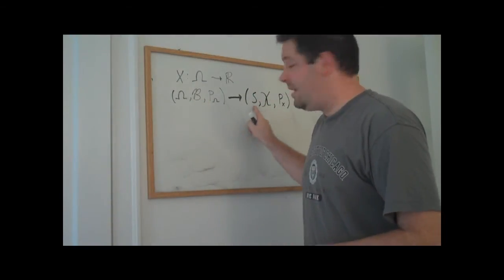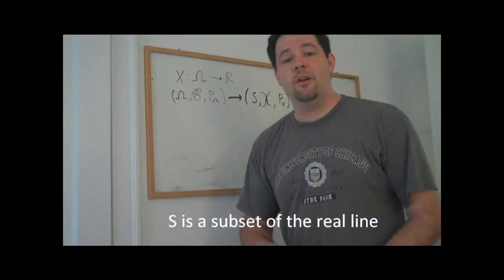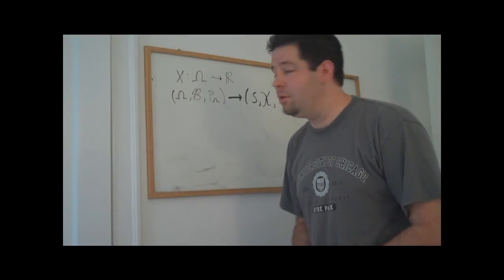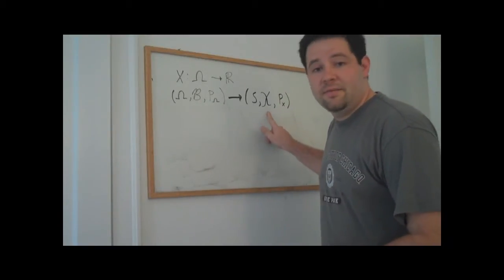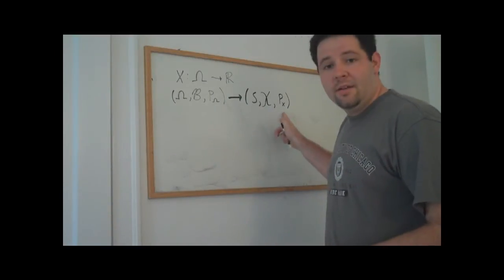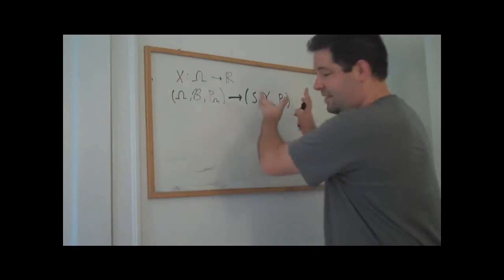Namely, s are the elements of x that the random variable x took the original elements of the sample space and converted into real numbers. x is the set of all subsets of s, and p of x is the probability measure that we use to describe probabilities on this sample space.